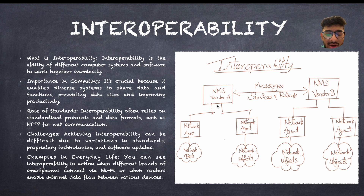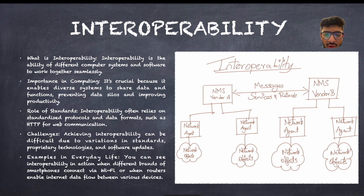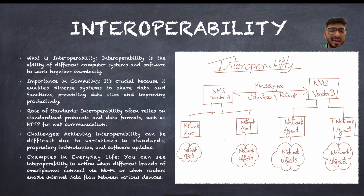As an example, you can see interoperability in action when different brands of smartphones connect via Wi-Fi or routers by enabling data flow while enabling internet data. So as I mentioned, we are taking two examples: Google and Samsung. This was all about interoperability.